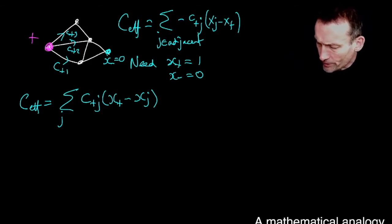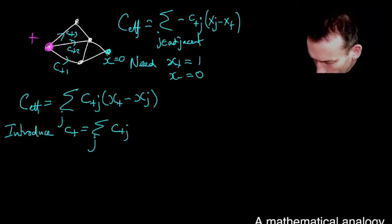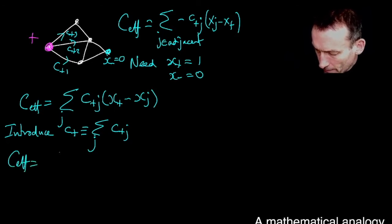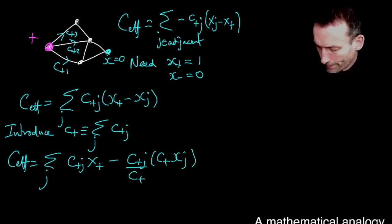Now, I know what I'm going to do. Let me introduce c plus to be the sum over the j's of the c plus j's. It's the total conductance of all the conductors coming out of the plus node. Let's introduce that, so that's a definition. Then you can see I can write ceff like this, the sum over those adjacent nodes, of c plus j, let's write that as x plus. Now, I'm going to write the second term as this, c plus j over c plus times c plus xj.